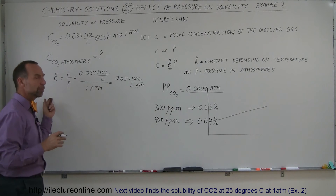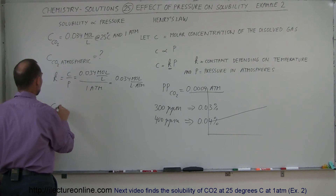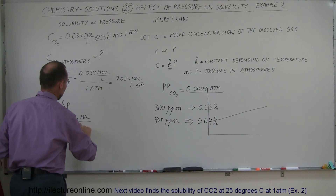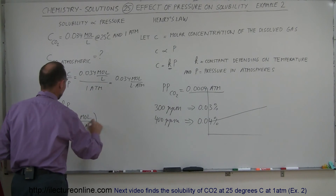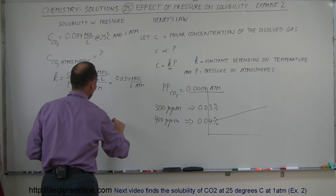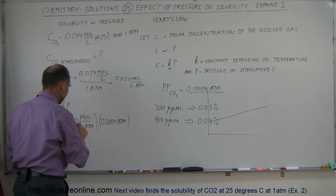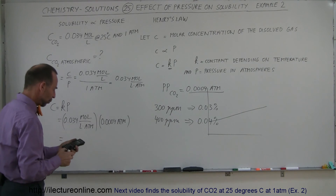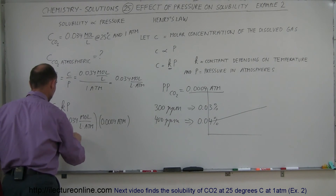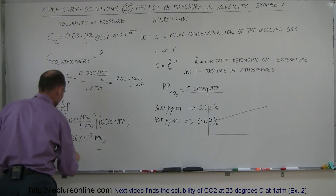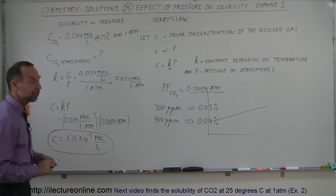So what would be the solubility of carbon dioxide under current atmospheric conditions? C is equal to K times P, which is 0.034 moles per liter·atm multiplied by the partial pressure of carbon dioxide in the atmosphere, 0.0004 atmospheres. Therefore, the solubility of carbon dioxide is 0.034 times 0.0004, which equals 1.36 × 10⁻⁵ moles per liter. That is the solubility of carbon dioxide in our atmosphere at 25 degrees centigrade.